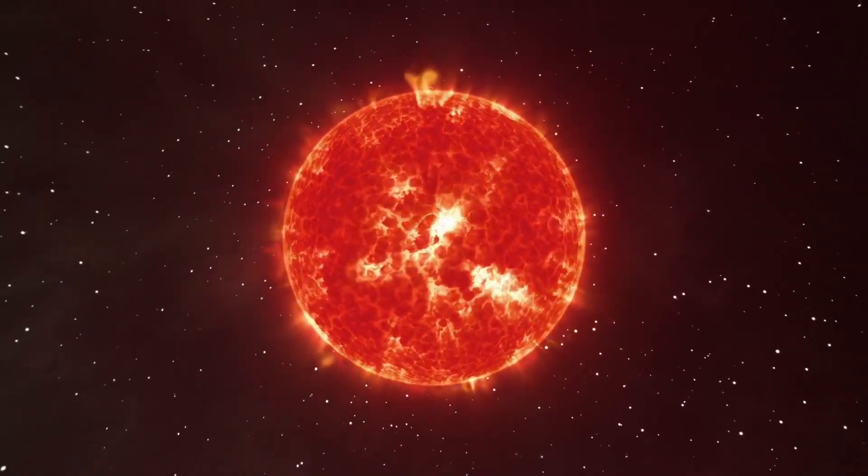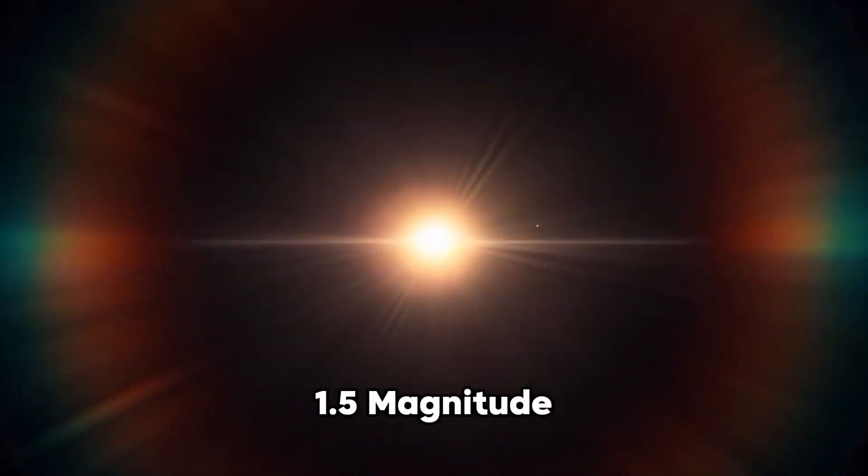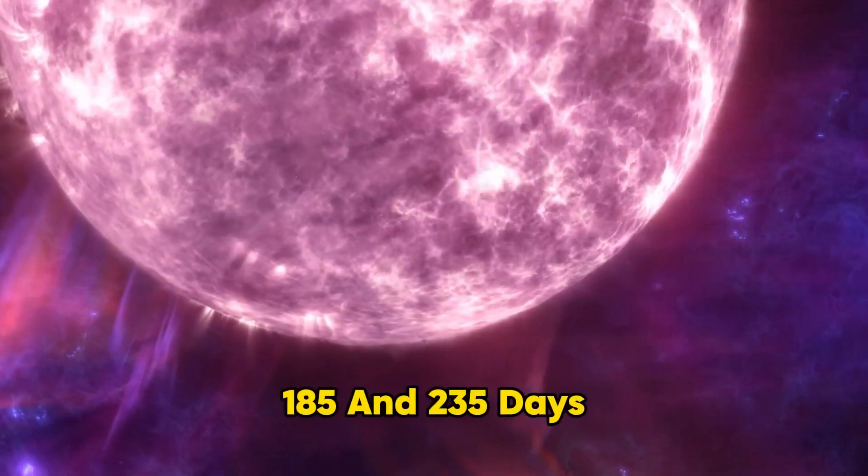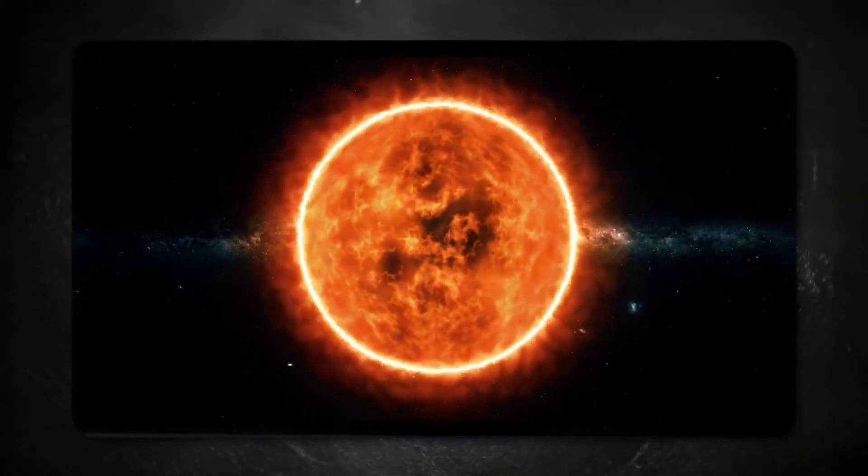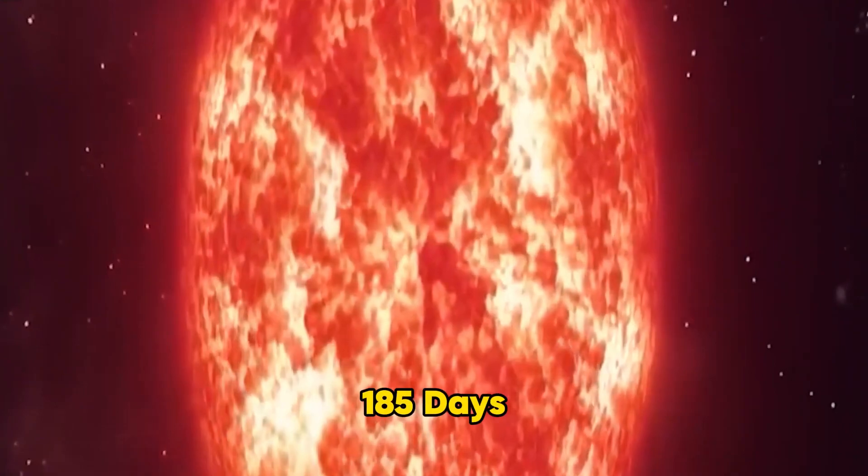Betelgeuse's light can range a lot for a star, from about 0.5 magnitude to as high as 1.5 magnitude. Between 185 and 235 days, the brightness change cycle can happen. The smallest cycle lasts about 185 days.